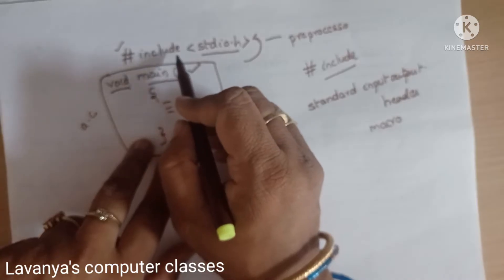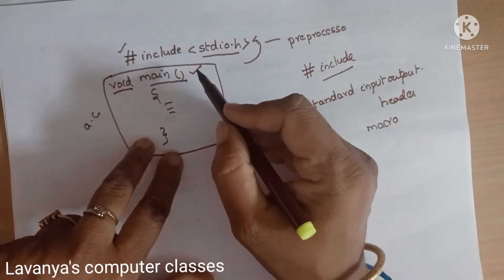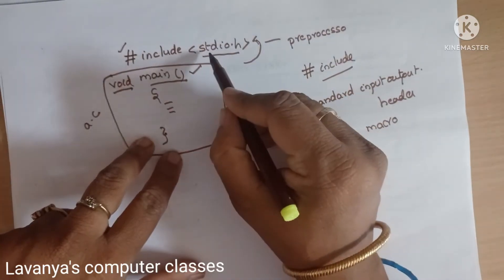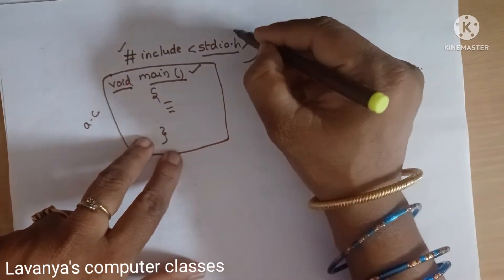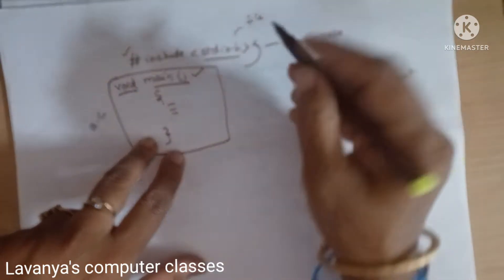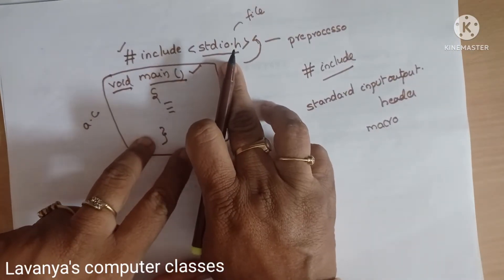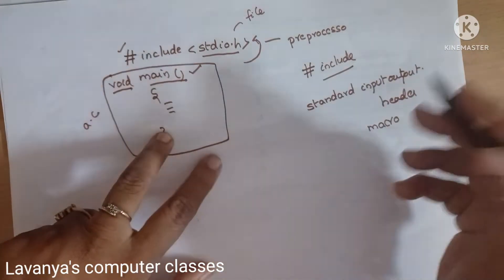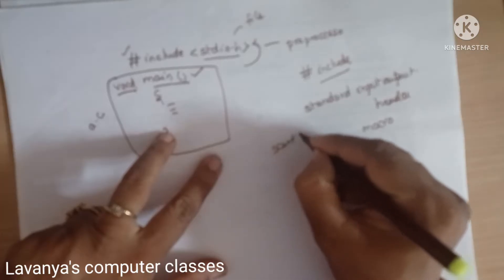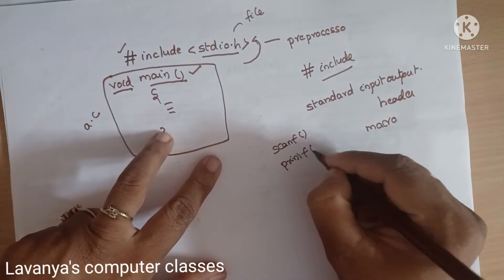Hash-include adds stdio.h into your program. It is a separate file. It adds all standard input and output functions — including scanf and printf functions — into your source code.